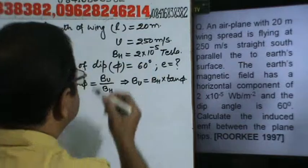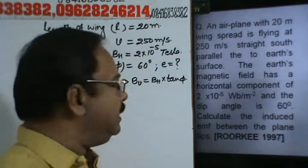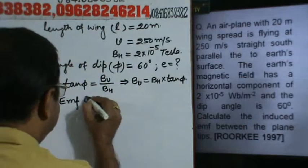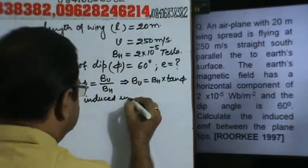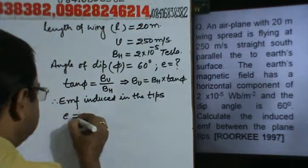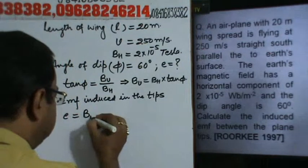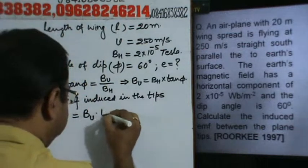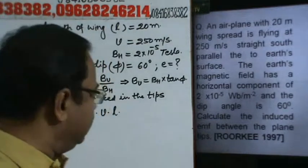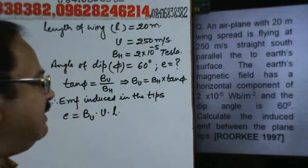Now what will be the EMF induced in the wings? Therefore, EMF induced in the tips of the plane, e will be equal to Bv into v into l. Bv is the vertical component of earth's magnetic field, v is velocity of aeroplane, and l is length of the wing.